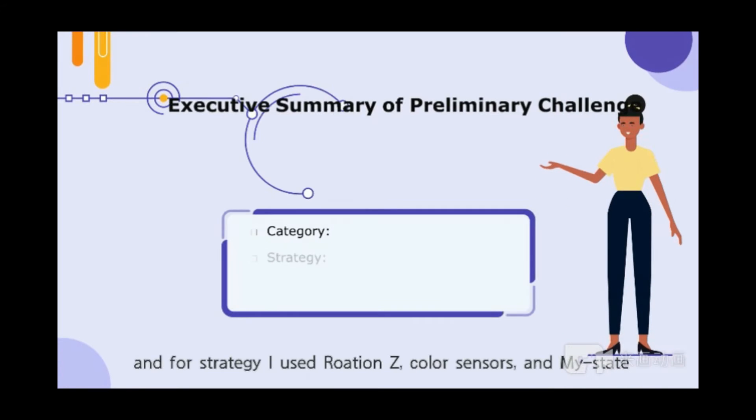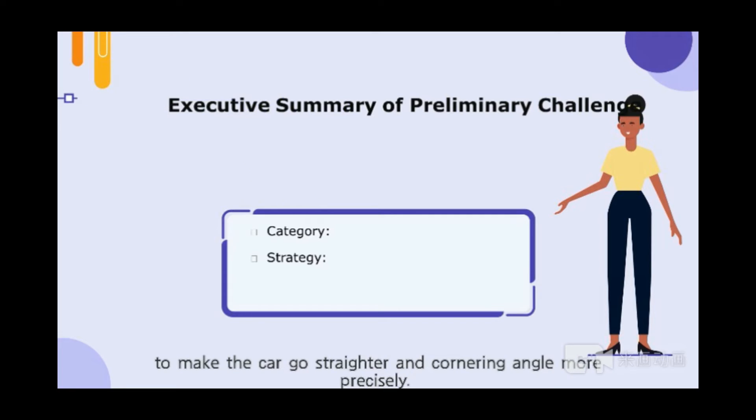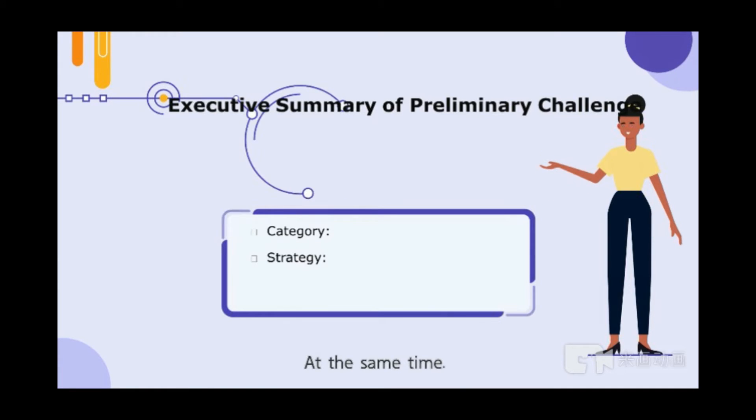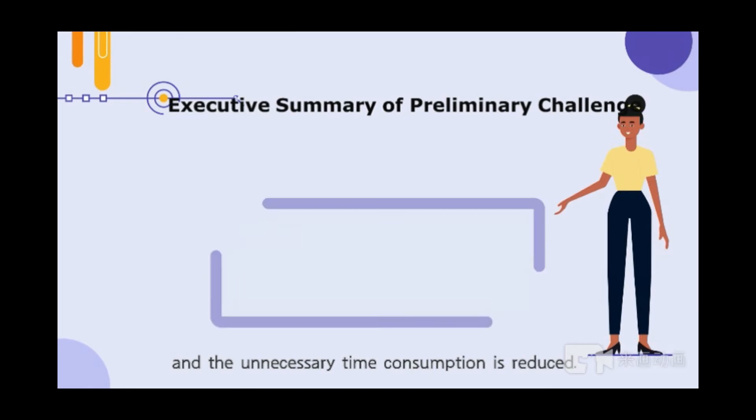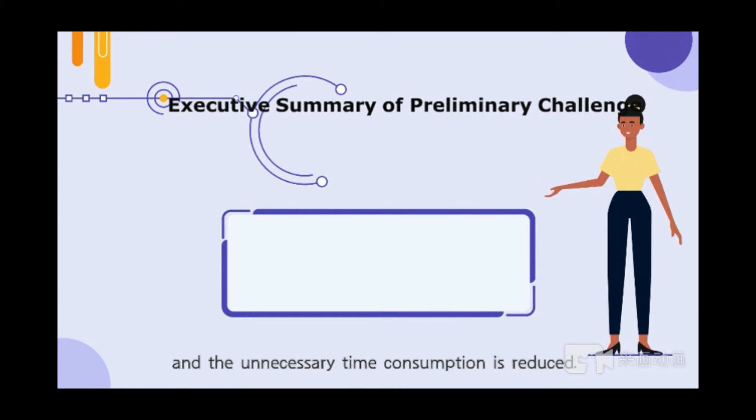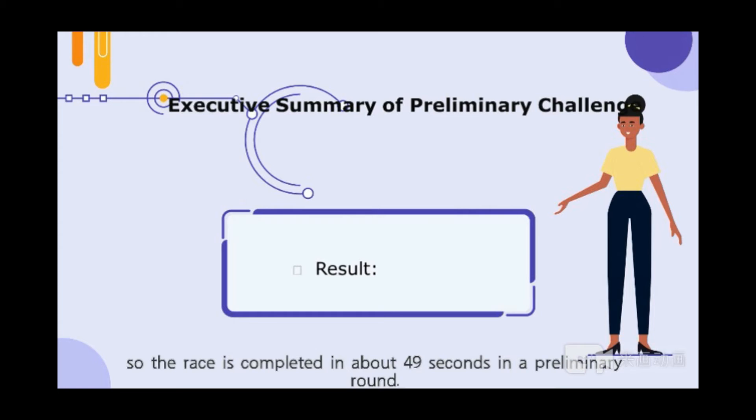For strategy, I used Rotation Z and color sensors to make the car go straighter and handle cornering angles more precisely. At the same time, on the premise of completing the task at each checkpoint, the time is shortened to the extreme and unnecessary time consumption is reduced. The race is completed in about 49 seconds in the preliminary round.